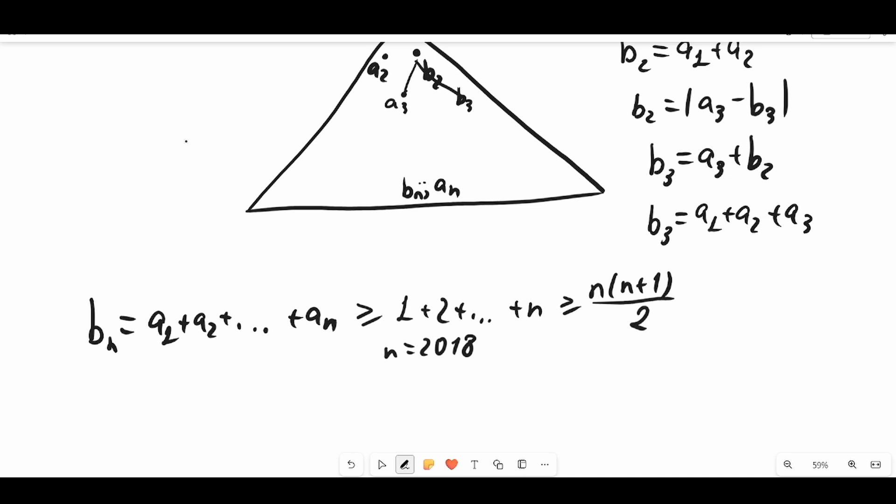Clearly this is the largest number which can be written in our Pascal triangle, so we have proved that bn must equal 2018 times 2019 over 2. And all these numbers a1, a2, all the way up to an, must be a permutation of numbers from 1 to 2018, otherwise we get a contradiction that bn must be a number which is greater than n times (n+1) over 2.